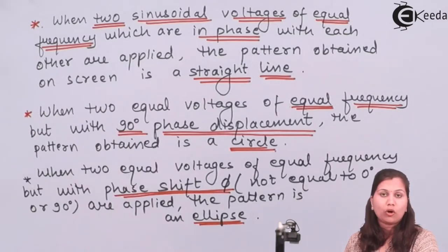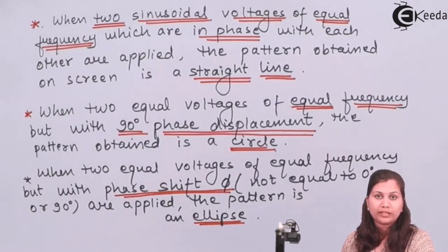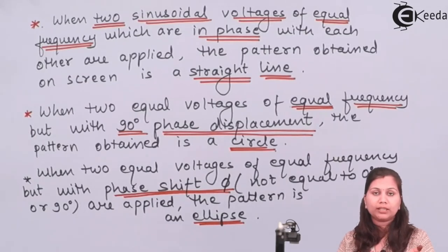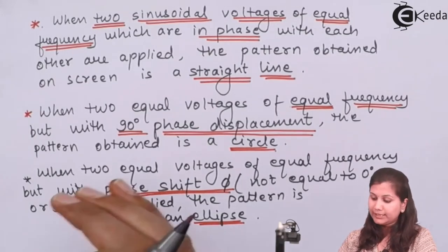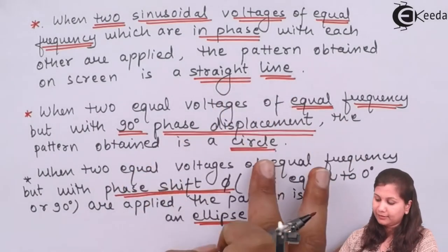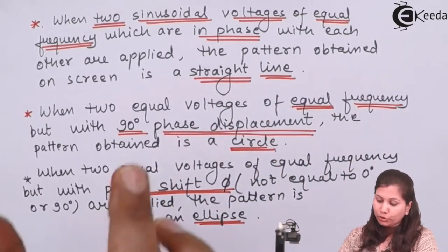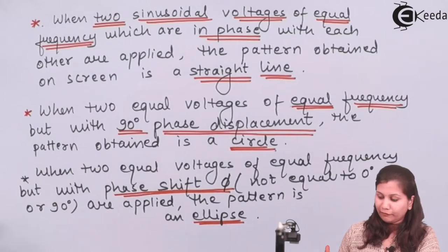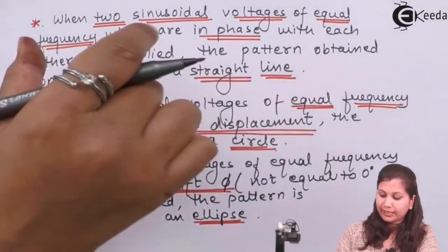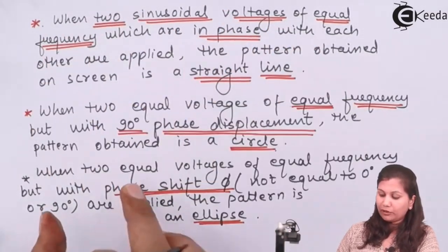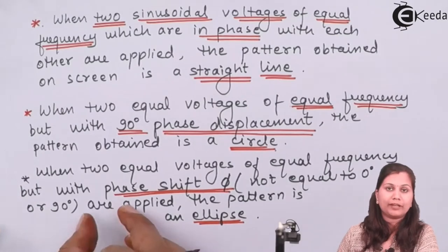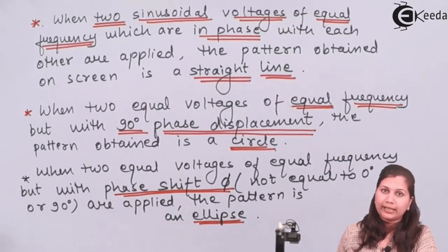These are the three types of Lissajous pattern observed when two sinusoidal voltages equal in magnitude and having the same frequency are applied to the vertical and horizontal deflection plates: a straight line, a circle, and an ellipse. Using this information, a conclusion can be made: if we obtain a straight line, the phase difference is 0; if we obtain a circle, the phase difference is 90 degrees; and if we obtain an ellipse, the phase difference is other than 0 or 90 degrees.